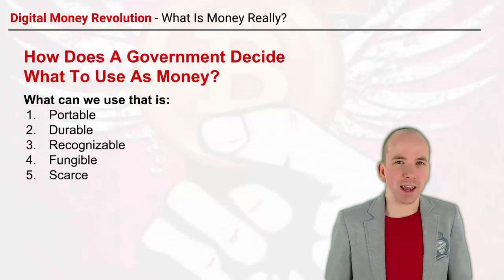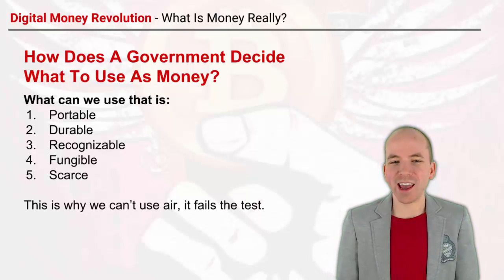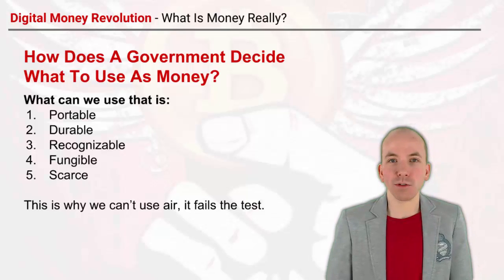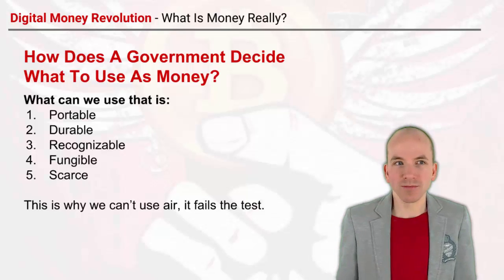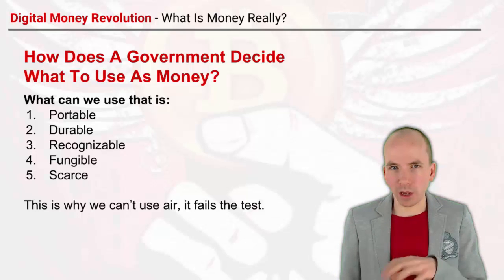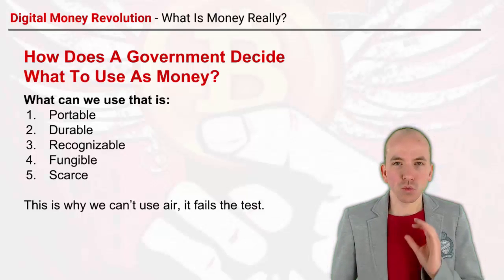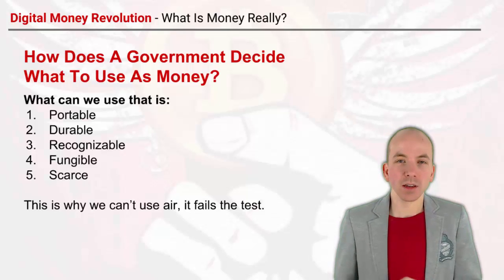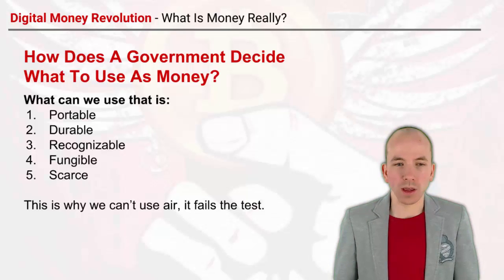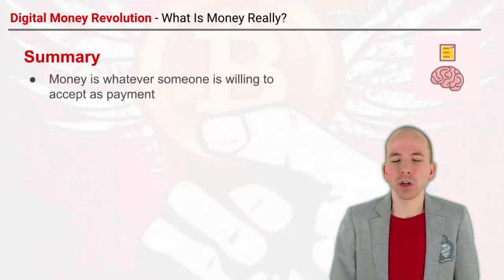Finally, currency has to be scarce. This is interesting — it's why we can't use air as currency, because it fails this test. Air is so abundant and easy to get hold of that it has no value. When we get into the economic stuff about how the economy works, you'll see that scarcity — the more rare something is — generally means the more value it has.